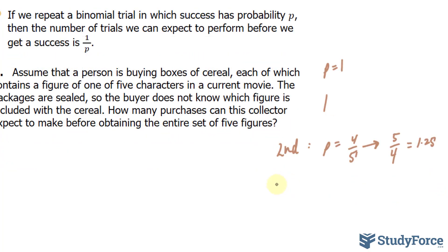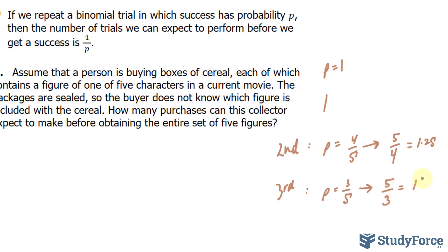In your third purchase, remember you've already obtained two of the figures. The probability of getting one that you don't have is 3 out of 5. Substituting 3 out of 5 into 1 over P, you get 5 over 3, which is equivalent to 1 and 2 thirds, or 1.66 repeating.